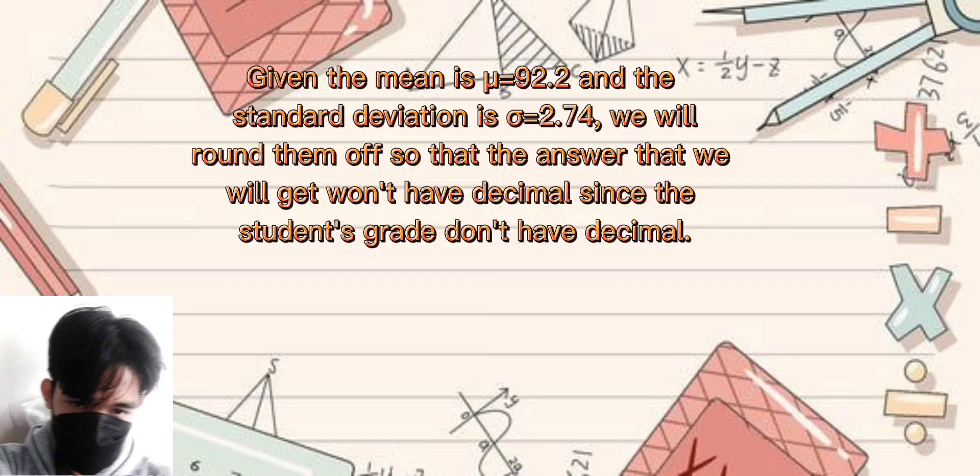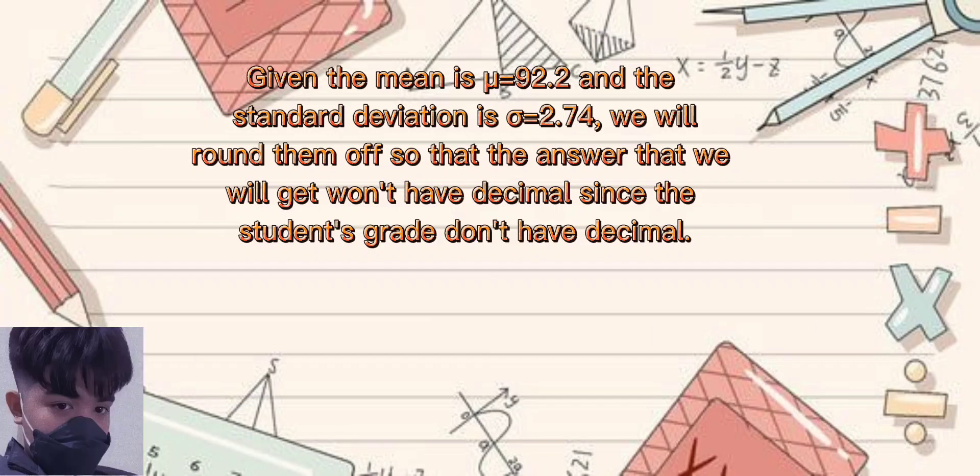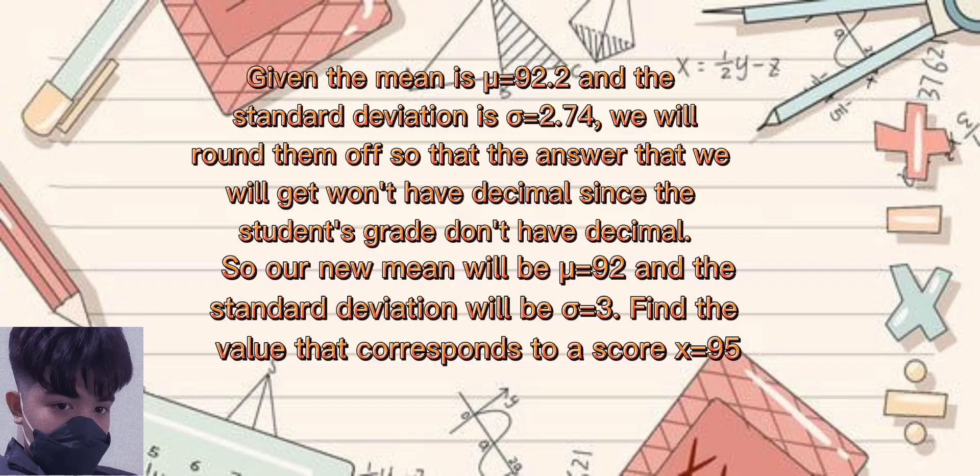Given the mean is equal to 92.2 and the standard deviation is equal to 2.74. But we are going to round them off so that the answer that we will get won't have decimal since the student's grade don't have decimal. And for our new mean, it will be equals to 92.